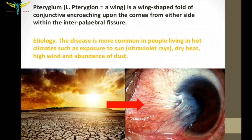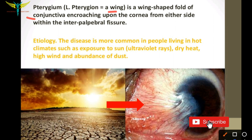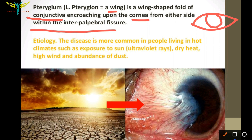Pterygium. The word pterygium in Latin indicates a wing. It is a wing-shaped fold of the conjunctiva that encroaches upon the cornea from either side within the interpalpebral fissure. The pterygium can be on the nasal side or even the temporal side.